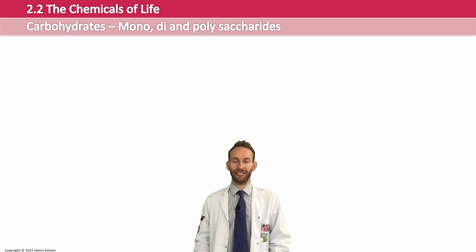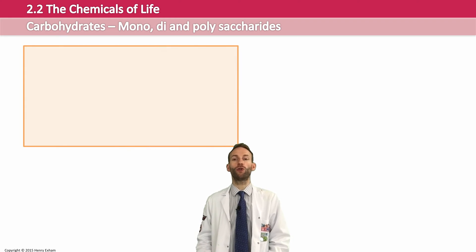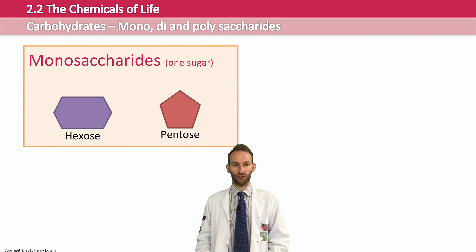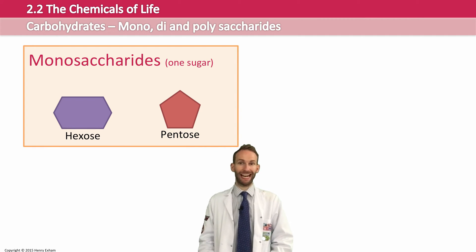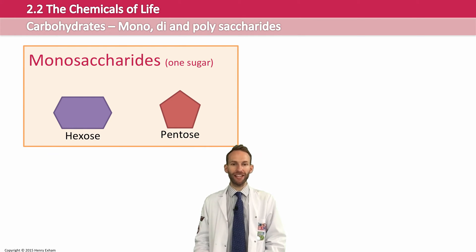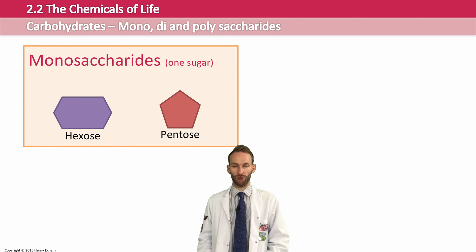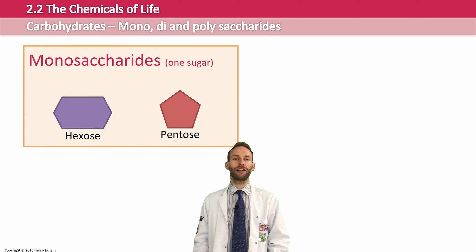Carbohydrates that contain just one sugar are called monosaccharides. There are two types you need to be familiar with: hexoses and pentoses. Hexoses have a hexagon shape — things like glucose. Pentoses are pentagon-shaped ring molecules, and those are things like ribose.